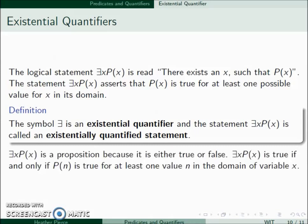∃x P(x) is a proposition because it's either true or false. It's true if and only if at least one n value exists that makes P(n) true.